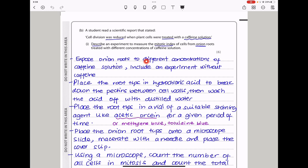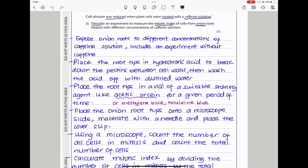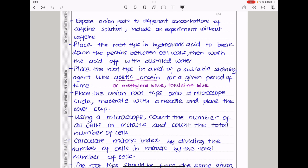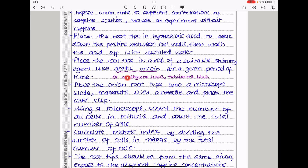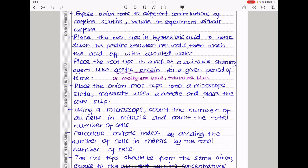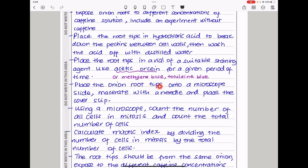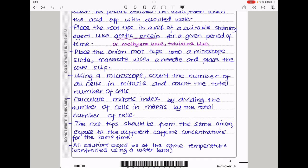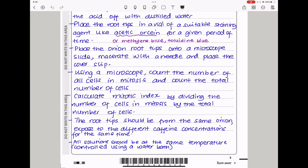So I say expose onion roots to different concentrations of caffeine solution, and include an experiment without caffeine. Place the root tips in hydrochloric acid to break down the pectins between cell walls, then wash the acid off with distilled water. Place the root tips in a vial of a suitable staining agent like acetic orcein. You could also use methylene blue or toluidine blue. Then place the onion root tips onto a microscope slide, macerate with a needle, and place a cover slip. Using a microscope, count the number of all cells in mitosis and count the total number of cells. Calculate the mitotic index by dividing the number of cells in mitosis by the total number of cells.